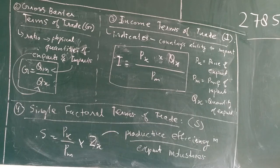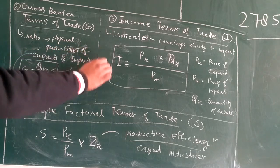It indicates a country's ability to import - how much a country can import. This is a very important measure. The formula is I = (Px × Qx)/Pm.